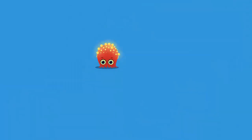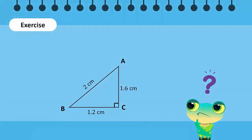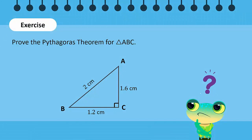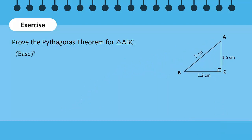Time for an exercise. Let's see if we can prove the Pythagoras theorem for another right-angled triangle. The square of the base BC will be 1.2 cm², which is equal to 1.44 cm².